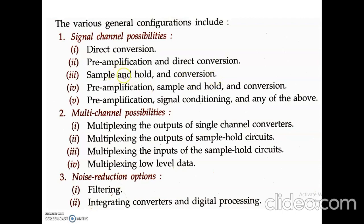The third type is sample-and-hold and conversion. Here, an additional stage called the sample-and-hold circuit is present. The analog signal is sampled into discrete signals and held for a constant time, after which these signals are converted into digital form by the ADC. The fourth type is preamplification, sample-and-hold, and conversion, which includes a signal conditioner, a sample-and-hold circuit, and an analog-to-digital converter. The fifth type is preamplification, signal conditioning, and any of the above four conversion stages.